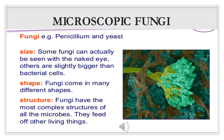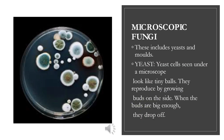Now we are discussing microscopic fungi. Fungi — for example, Penicillium and yeast. Size: some fungi can be seen with the naked eye; others are slightly bigger than bacterial cells. Shapes: fungi come in many different shapes. Structure: fungi have the most complex structures of all microbes. They feed off other living things. We will discuss the types of fungi, which include yeasts and molds.